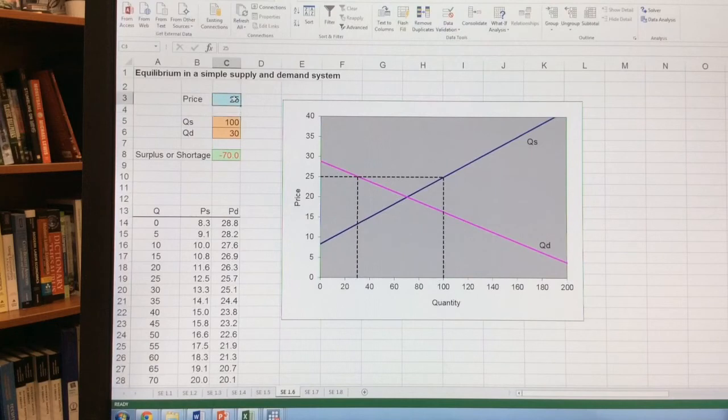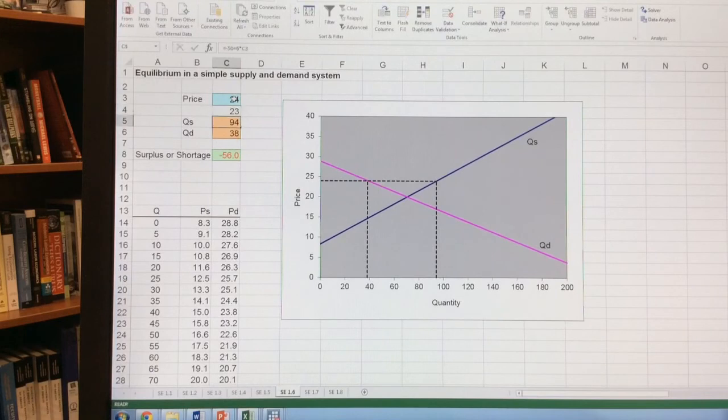What the system of equations does is it works to solve these lines until quantity supplied equals quantity demanded.